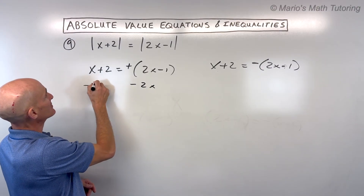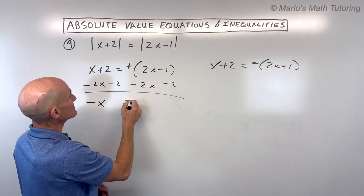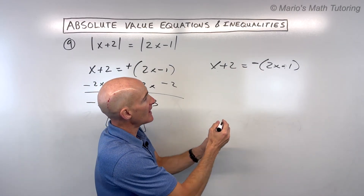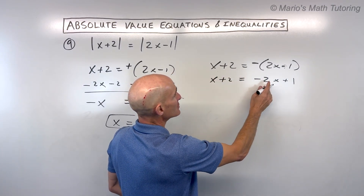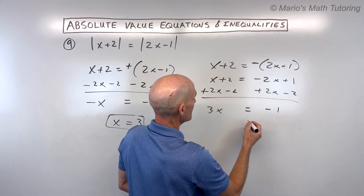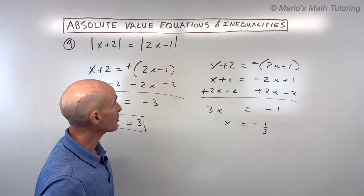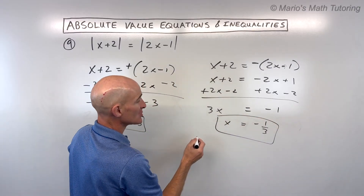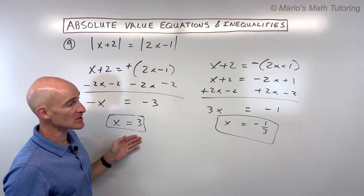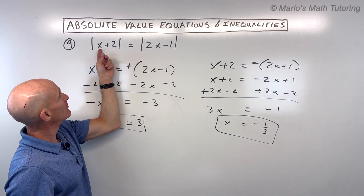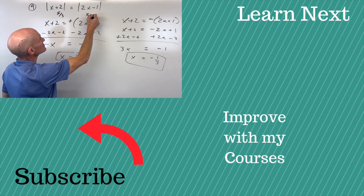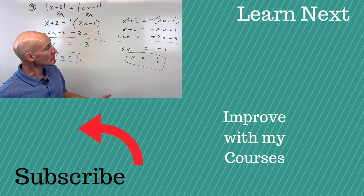Solving the first equation: subtract 2x and subtract 2 from both sides to get negative x = negative 3, so x = 3. For the second, distribute the negative to get negative 2x plus 1, then add 2x to both sides: 3x = 1... wait — add 2x, giving x + 2 = −2x + 1, then 3x = −1, so x = −⅓. Checking x = 3: |5| = |5| ✓. Checking x = −⅓: |5/3| = |−5/3| — the absolute value of negative 5/3 is positive 5/3, so both are valid solutions.